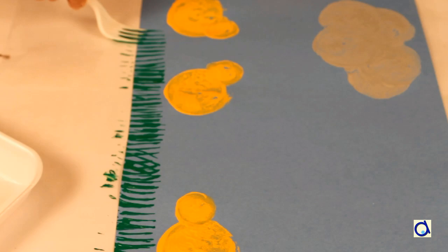When the paint is dry, draw the legs of the chicks with the black marker and then draw the eyes.